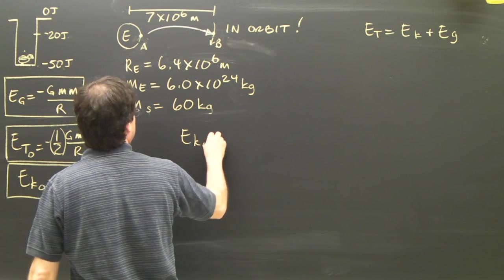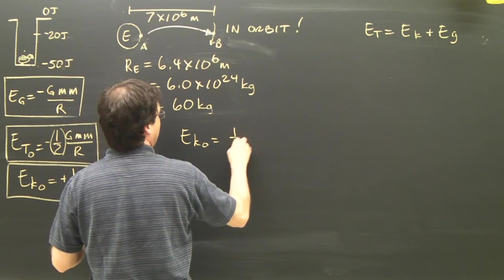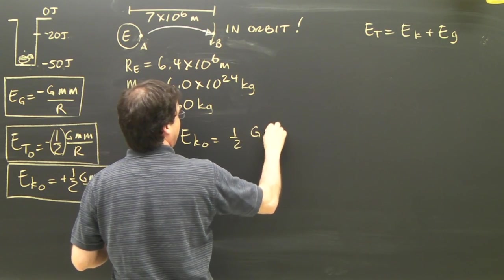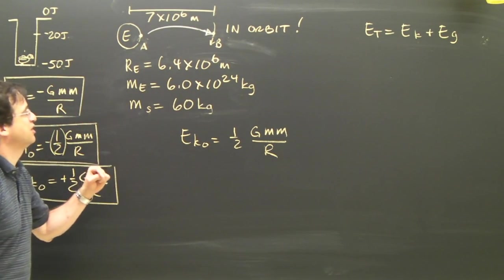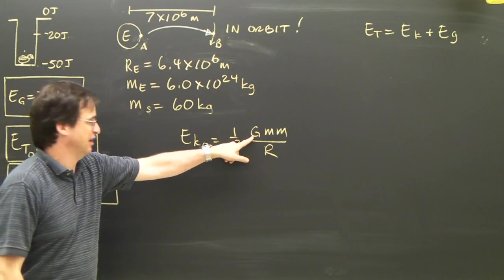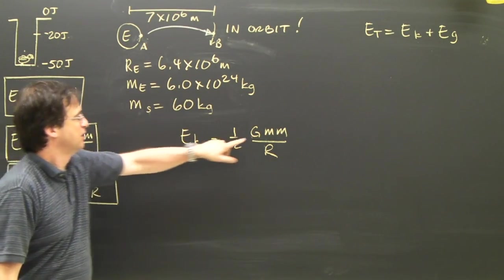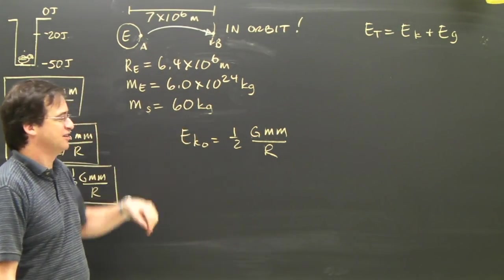So what's the kinetic energy in orbit? It's one-half GMm over R. And what do you use here? G is 6.67 times 10 to the minus 11, mass of the Earth, and mass of the satellite, which is 60 kg in this case.